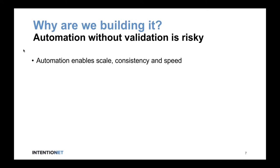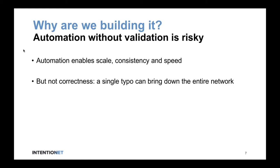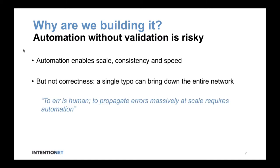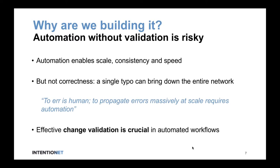We see this amazing trend in networking around automation. Network automation enables you to scale, it enables consistency, and it provides great speed of operation. But the one missing piece is it doesn't guarantee correctness — a single typo can bring down your entire network. As the saying goes: to err is human, to propagate errors massively at scale requires automation. Effective change validation is crucial in any automated workflow.